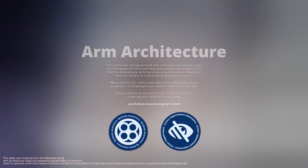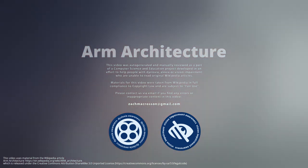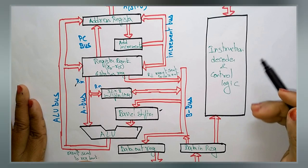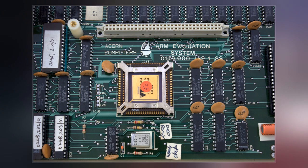ARM, previously Advanced RISC Machine, originally Acorn RISC Machine, is a family of reduced instruction set computing architectures for computer processors, configured for various environments.